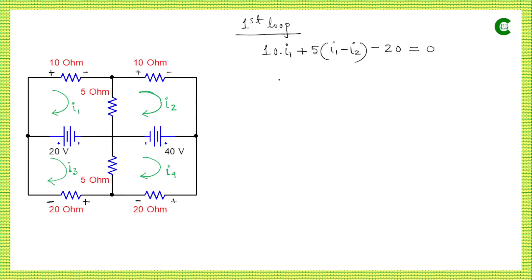After simplification, this gives us Equation 1. Now we will move to the second loop.